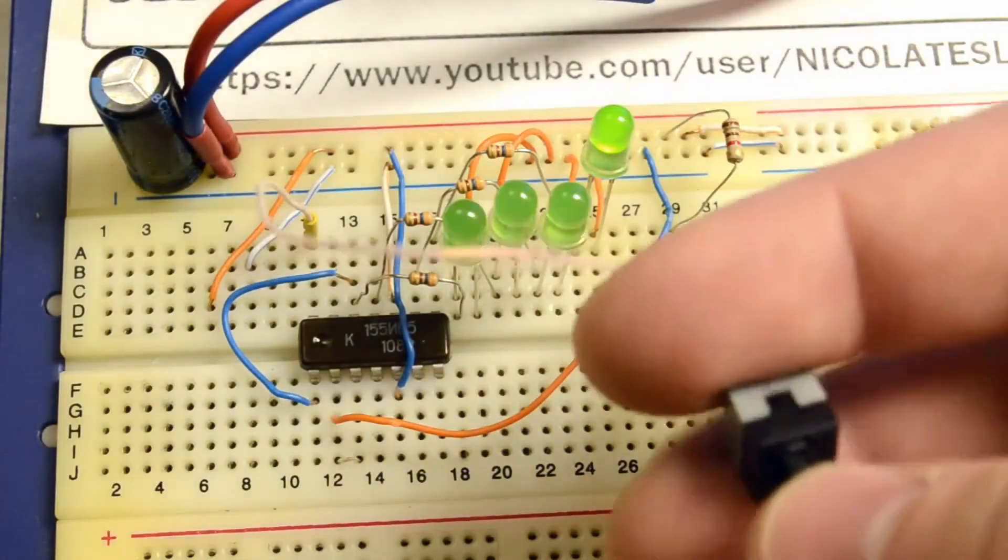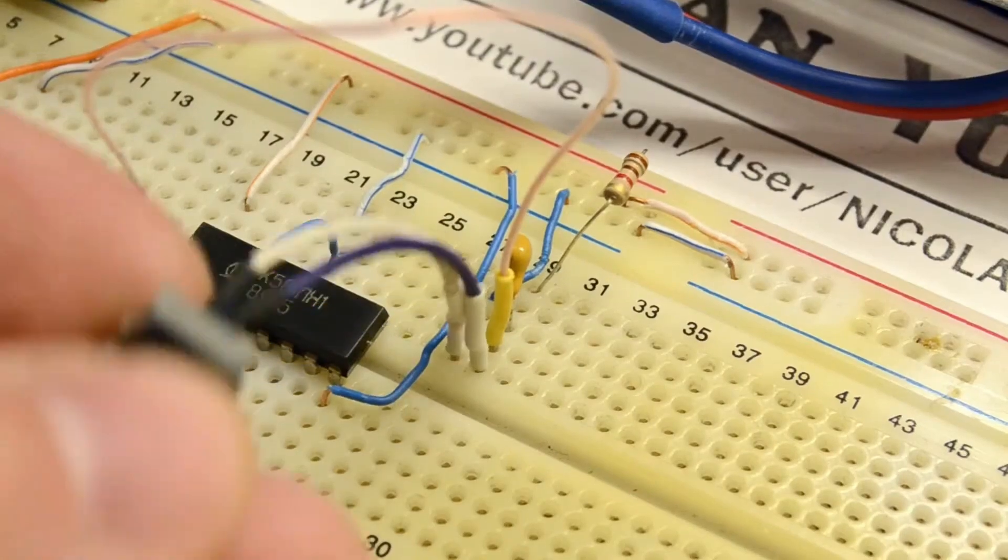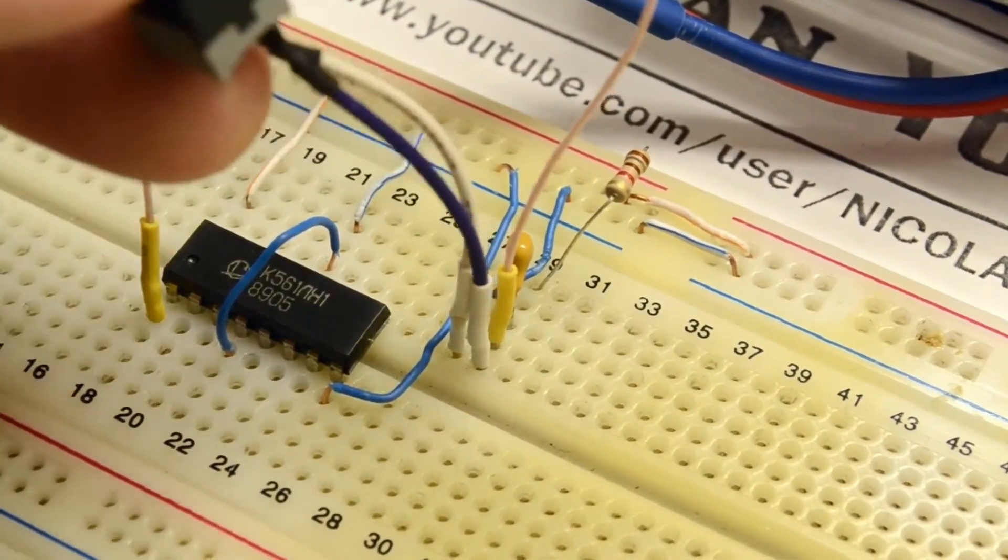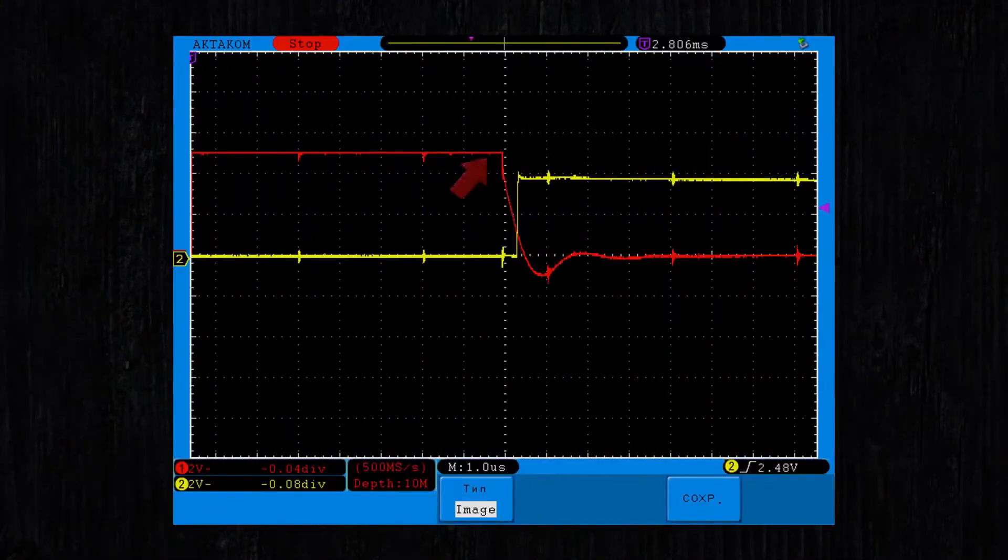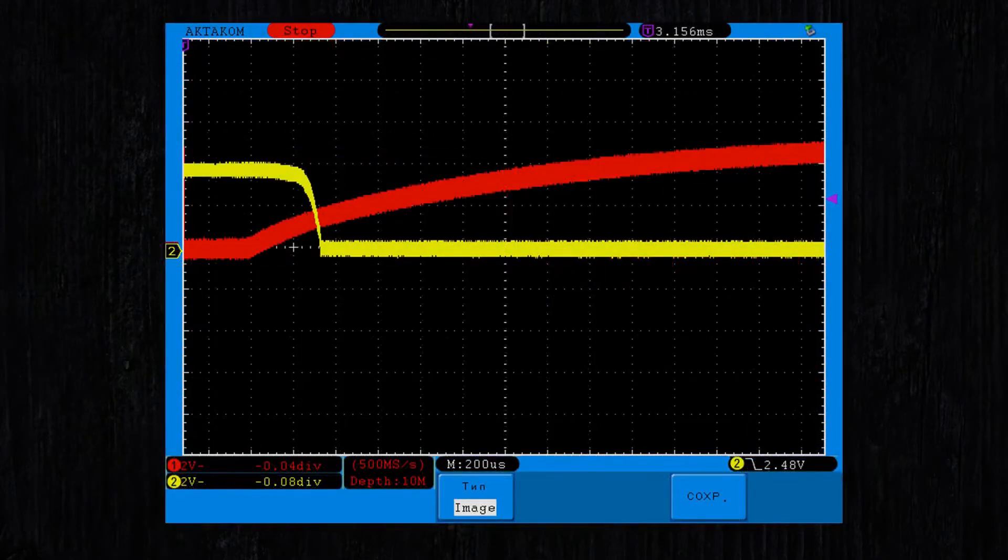To test the functionality of such simple circuits, it's convenient to use breadboards. Now let's connect a button with a capacitor to these microchips. What happens? At the moment the button is pressed, the charged capacitor essentially connects to the ground and discharges with a large current. When the button is released, the capacitor will charge through the pull-up resistor, thereby smoothing the signal edge from the button.